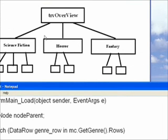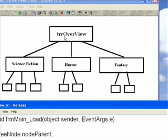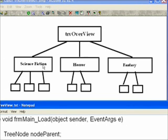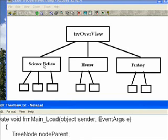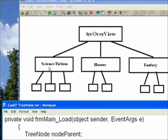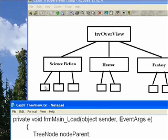From a graphical point of view, this is essentially what we're doing. We have our TRV Overview tree view created in the form, and then we're adding nodes to it. The first node in the outer loop is Science Fiction, the second is Horror, and the third is Fantasy. Each time we change nodes in the outer loop, we have an inner loop which adds the movie to the node — not directly to the tree view, but to the node. The first case is Science Fiction: I think it's 2001, then Brainstorm, then The Black Hole.